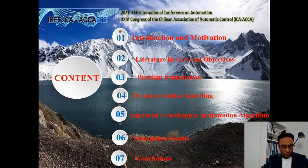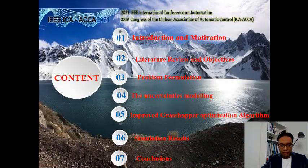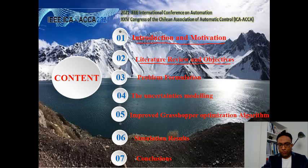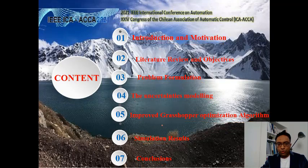We have seven contents. First: Introduction and Motivation. Second: Literature Review and Objectives. Third: Problem Formulation and Uncertainties Modeling. Fourth: Improved Grasshopper Algorithm. Fifth: Simulation Results. Sixth: Conclusion.